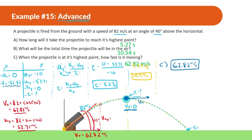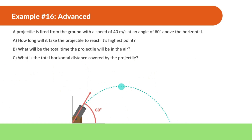We're going to do a similar problem. I'd highly suggest you try to do this mostly on your own. A projectile is fired from the ground with a speed of 40 meters per second and an angle of 60 degrees above the horizontal. How long will it take to reach its highest point? What will be the total time the projectile is in the air? And what is the total horizontal distance covered by the projectile?